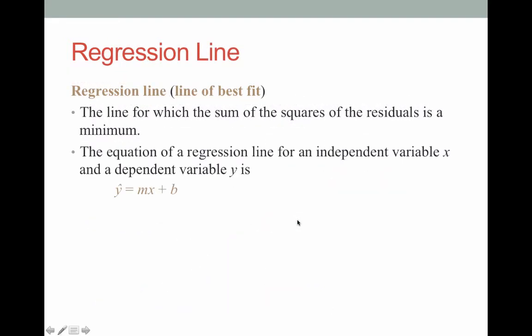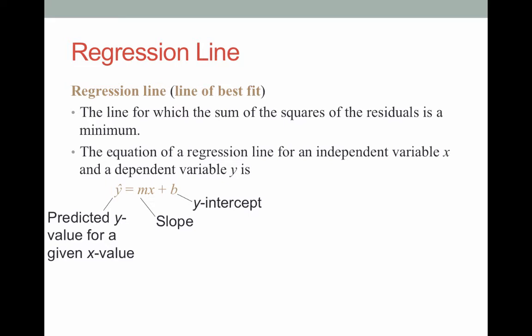The equation of a regression line for an independent variable x and a dependent variable y is y-hat equals mx plus b. Notice I'm saying y-hat — y-hat is going to be our symbol for predicted y values. You guys should be comfortable with this because you know lines: m stands for slope and b is the y-intercept. Y-hat is our predicted y value for some given x value.